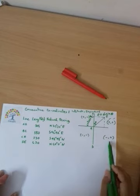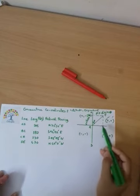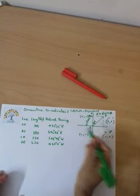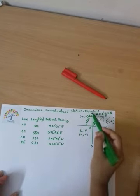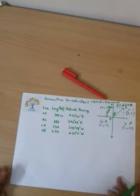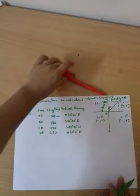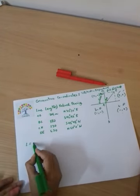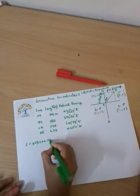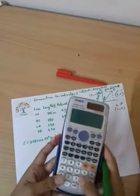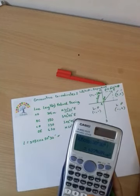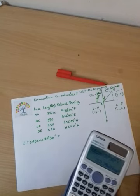In the first quadrant, latitude is positive and departure is positive. Now for traverse leg AB, the latitude equals 305·cos(30°30'), which equals 262.79 meters.